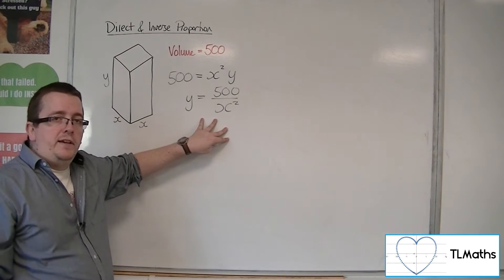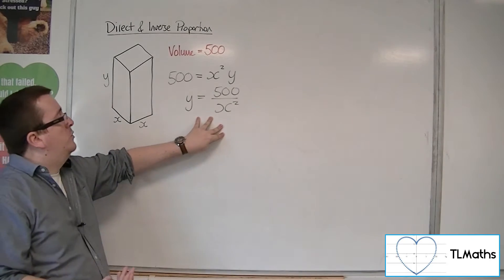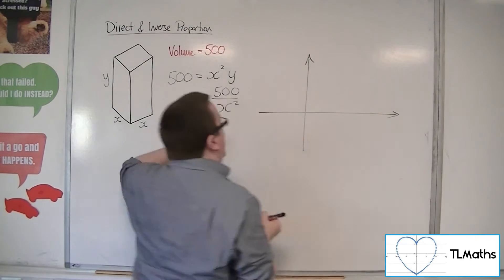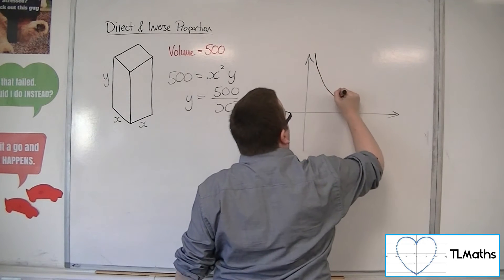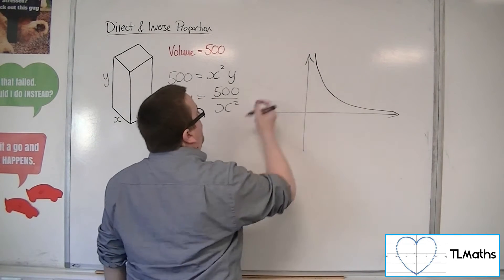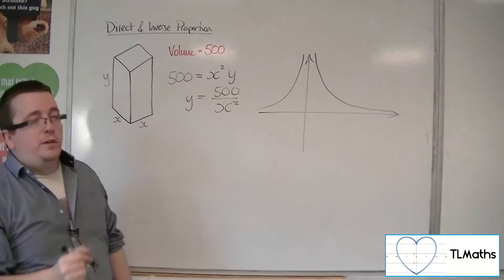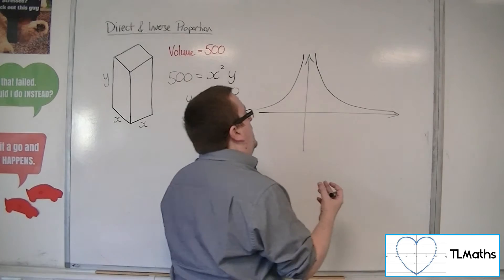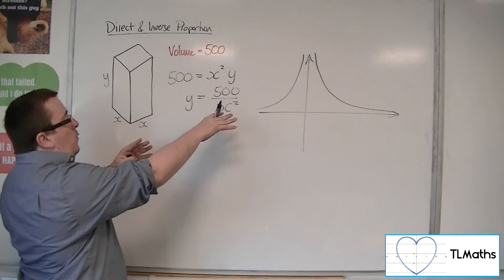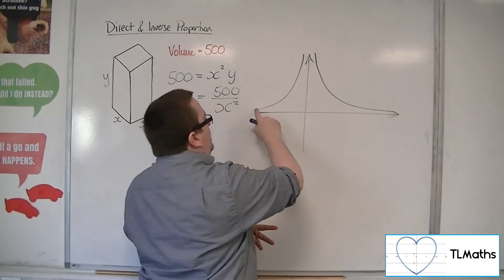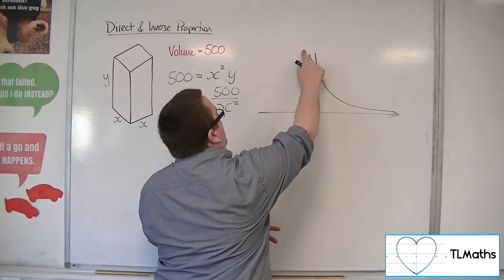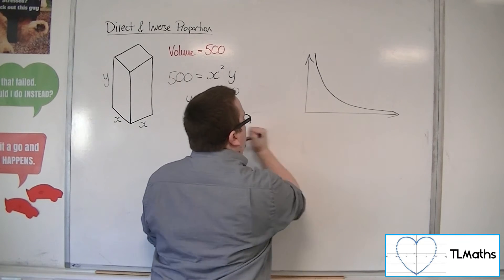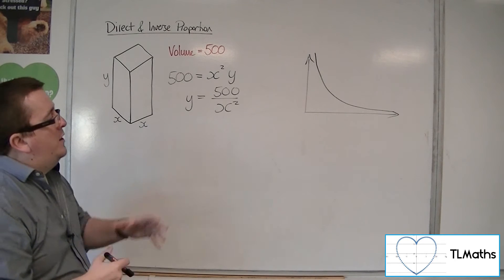We've looked at these reciprocal graphs as part of this section. So if I was to graph this just in a sketch, the situation would look something like this. Now we know that 500 over x squared, if I were to graph it properly, would look like that. But the problem is that the situation we're talking about is that we won't have negative values of x. So this side of the graph won't actually exist. I'm not interested in anything to the left of the y-axis or below the x-axis.